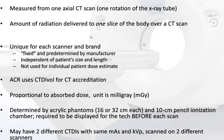CTDI volume is independent of patient size and length, and this is the main difference from DLP dose length product, which factors patient length. CTDI is not used for individual patient dose estimates. ACR uses CTDI volume for CT accreditation. It is proportional to absorbed dose, units are milligray, and it is determined by acrylic phantoms — a 16 cm or 32 cm phantom with a 10 cm pencil ionization chamber.